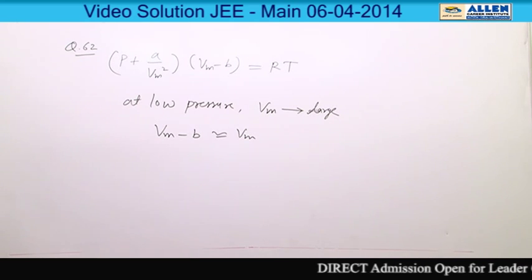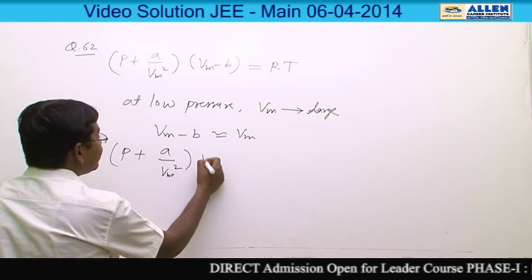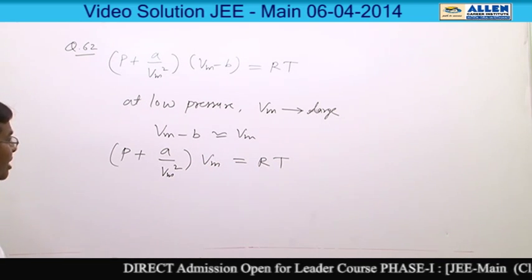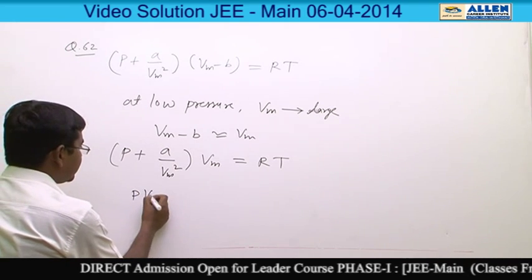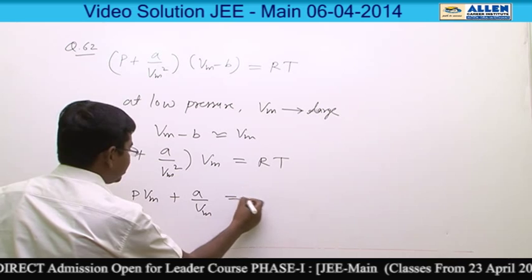And if I have written this, this is P plus A by Vm whole square into Vm is equal to RT. If we multiply this, P Vm plus A by Vm is equal to RT.